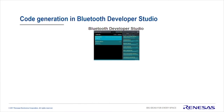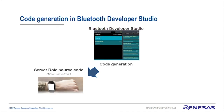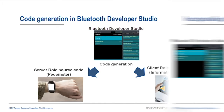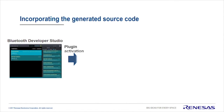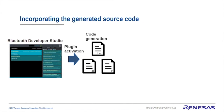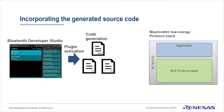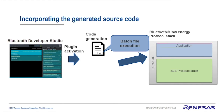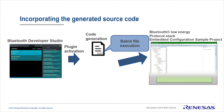Now that the design is completed, we will generate the source code. The plug-in of Bluetooth Developer Studio, provided by Renesys, can generate both the server role side, which is the pedometer side, and the client role side to access its pedometer. Launch the plug-in on Bluetooth Developer Studio to generate code. It creates source files as well as a batch file. The batch file copies the source code to the protocol stack. At this time, code generation is complete.